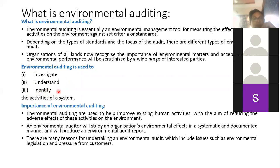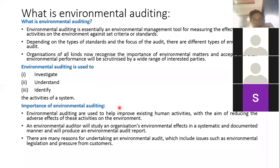The importance of environmental auditing is that it is used to help improve existing human activities by reducing the adverse effects of these activities on the environment. The basic purpose is to decrease the effect of human activities on different environmental factors. The environmental auditor will study and organize the amount of effect in a systematic and documented manner and produce an environmental audit report.